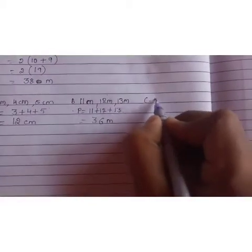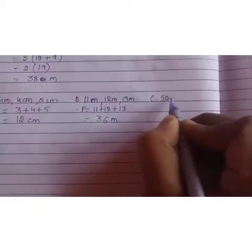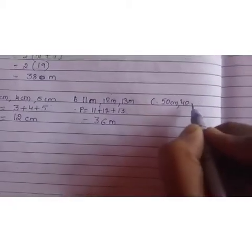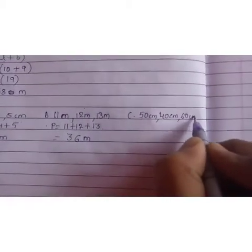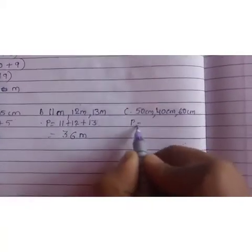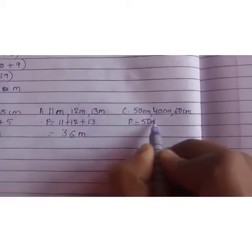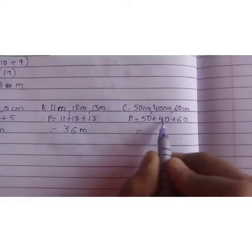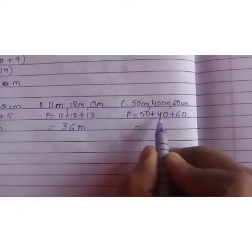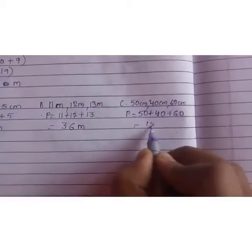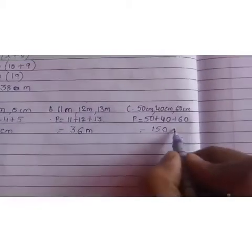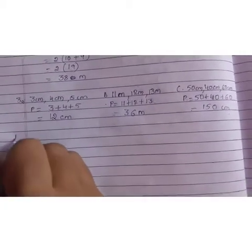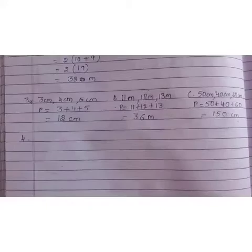Question number C. 50 centimeters, 40 centimeters and 60 centimeters. Again, P equals 50 plus 40 plus 60. So, 5 plus 4 is 9. 9 plus 6 is 15. And add this 0. So, it will be 150 centimeters. Is it clear? Now, let us move to question number 4.